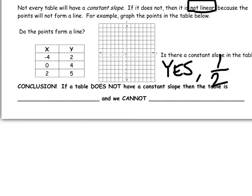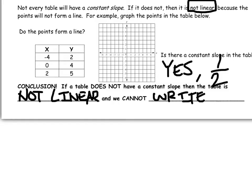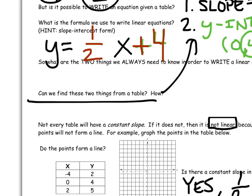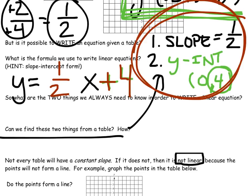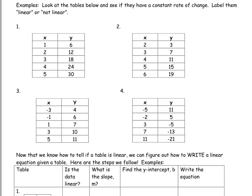Conclusion: if a table does not have a constant slope, then the table is not linear and we cannot write the equation. The two things that you need to write the equation are always slope and Y-intercept. Can you find these things from a table? Yes, you can. Look at the table below and see if they have a constant rate of change. Label them linear or not linear.